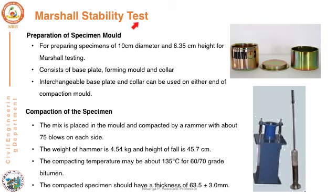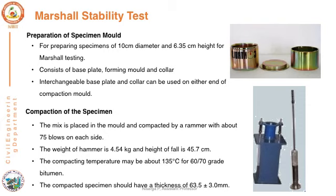We will determine the percentage of bitumen — the optimum binder content — to produce a stable mix. For preparing a specimen, we require a mould of 10 cm diameter and 6.5 cm height, consisting of a base plate and a collar so that material is not wasted during compaction. Interchangeable base plate and collar are used because compaction has to be done on both sides of the Marshall stability specimen.